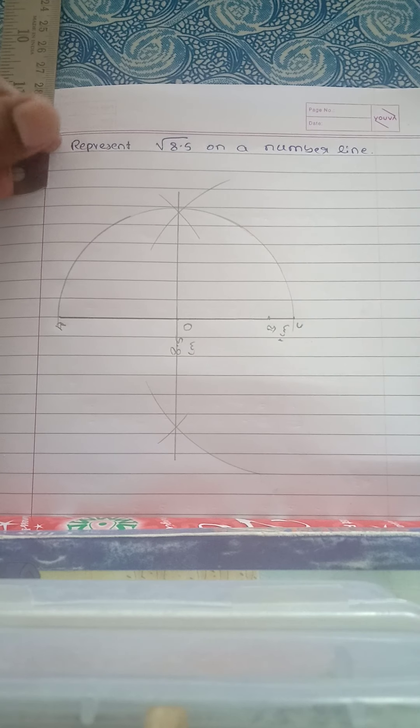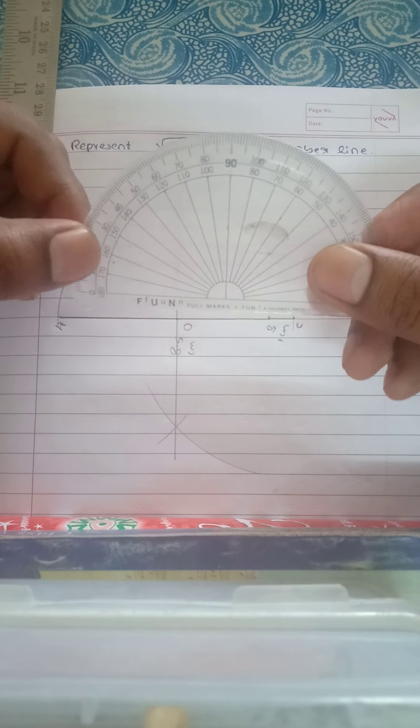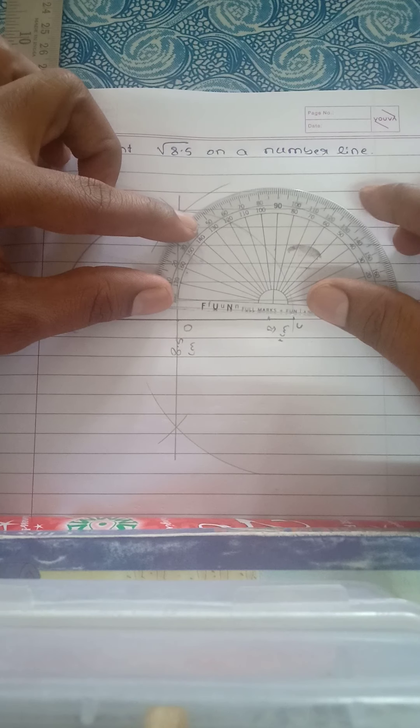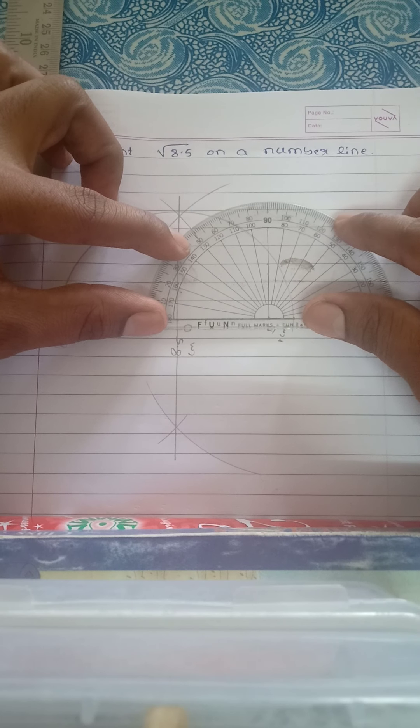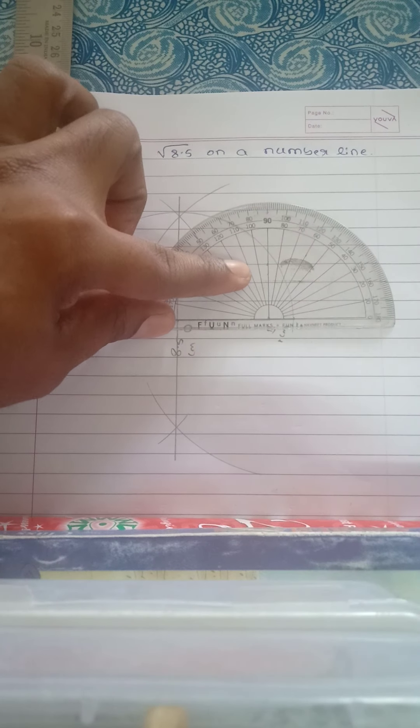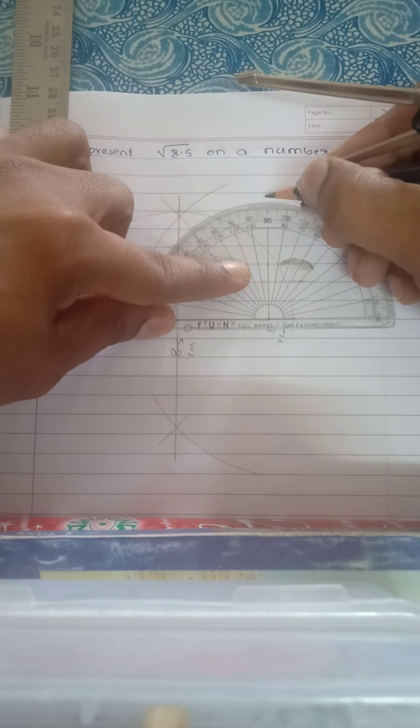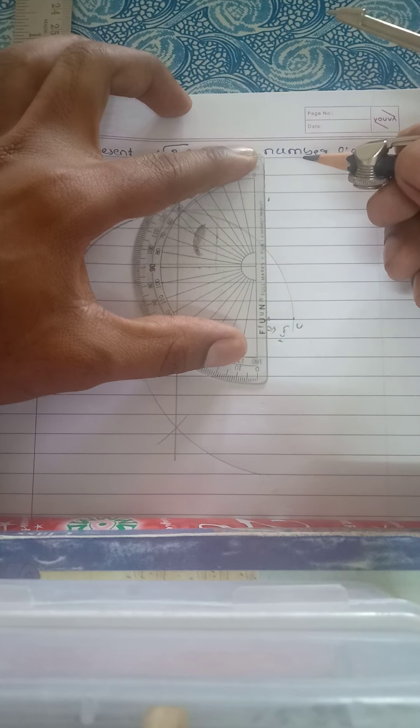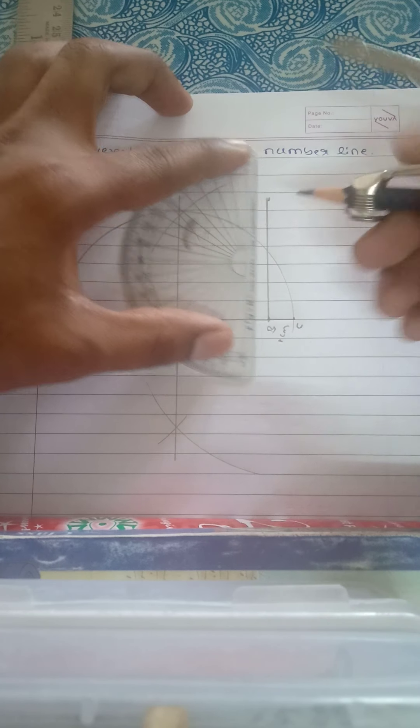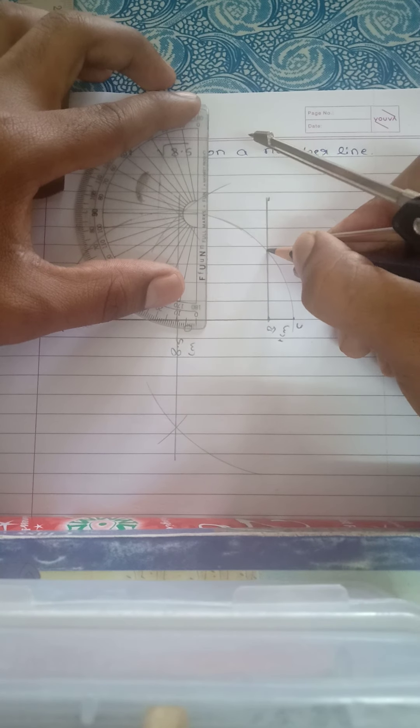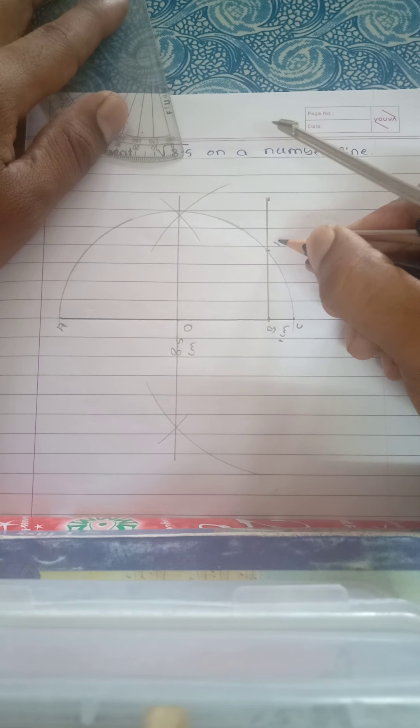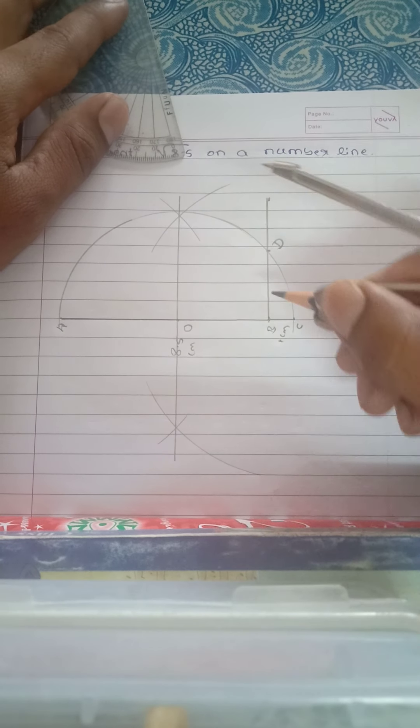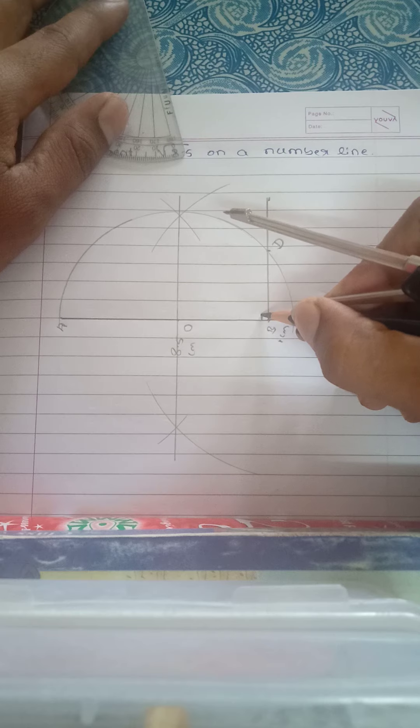Now take a protractor, keep the protractor point at exact B. Now exactly you should draw a perpendicular line. Yes, so the perpendicular line touches the semicircle at D. That BD is perpendicular to AC at B.